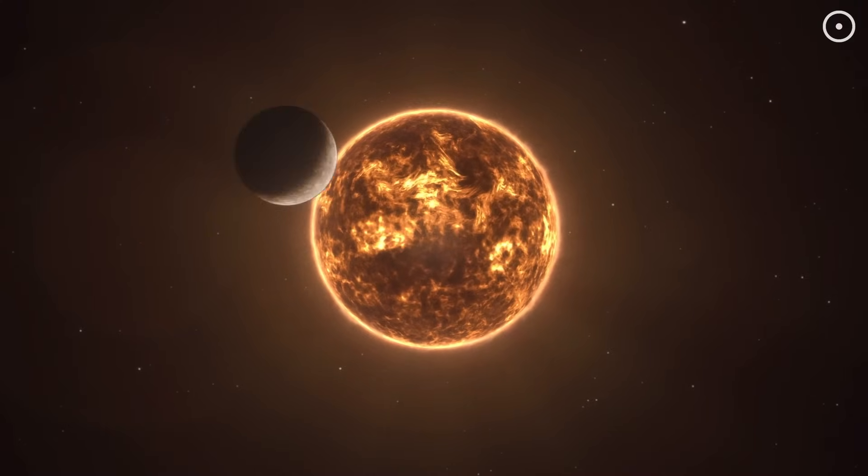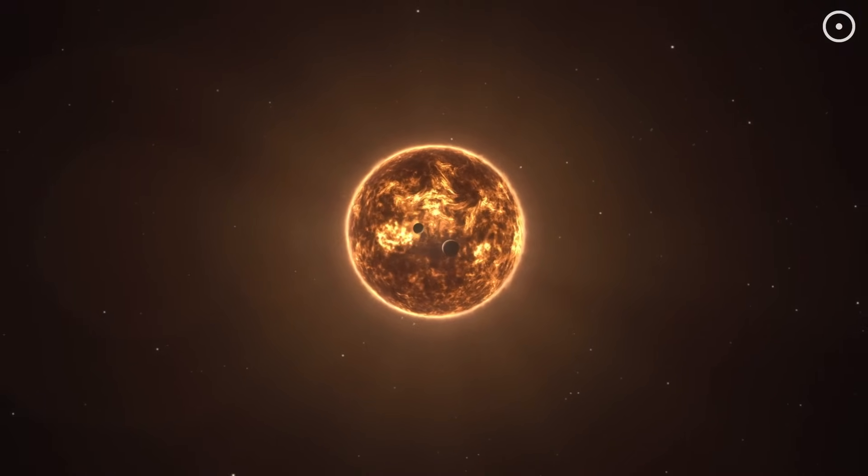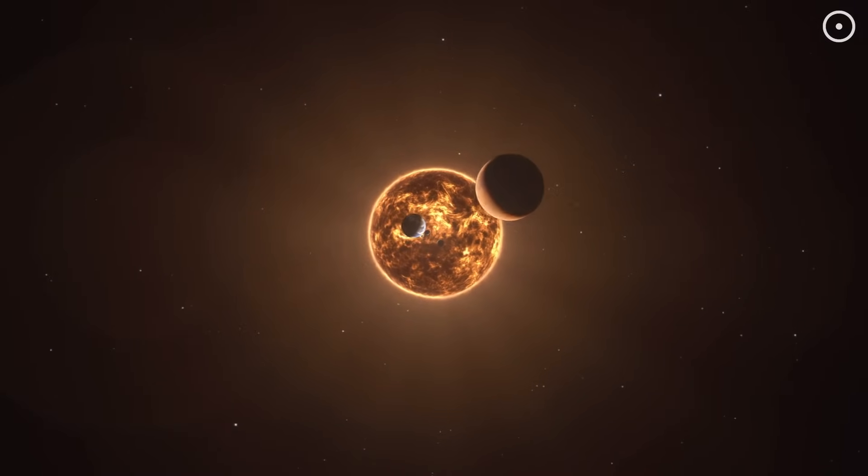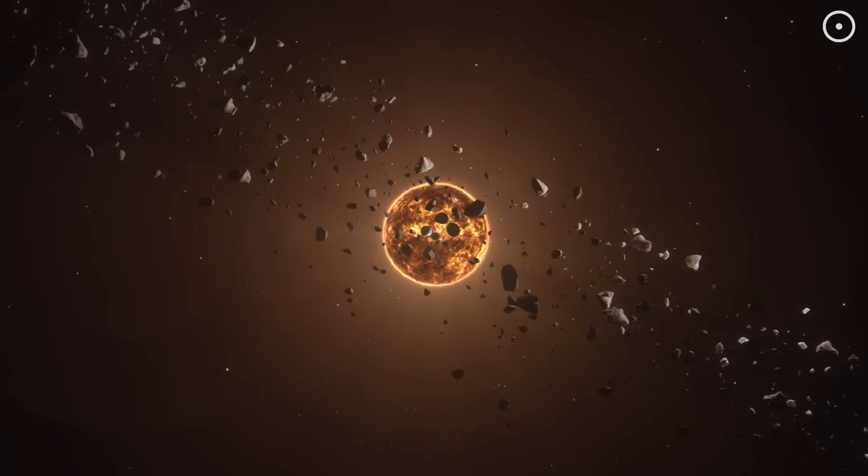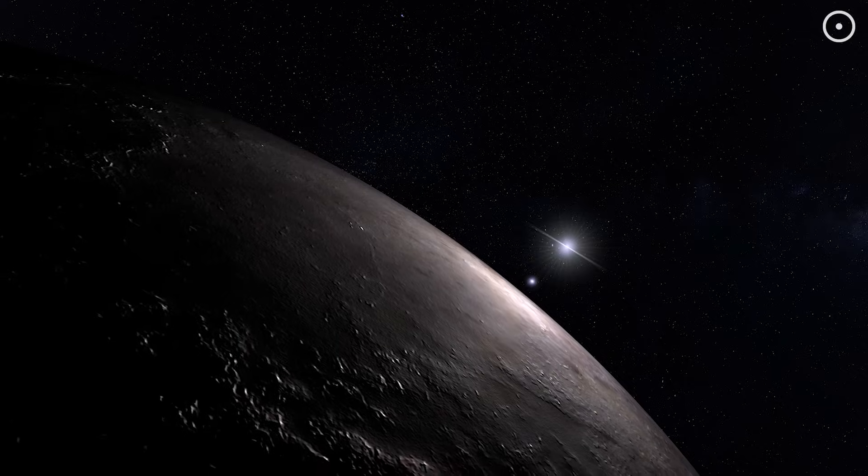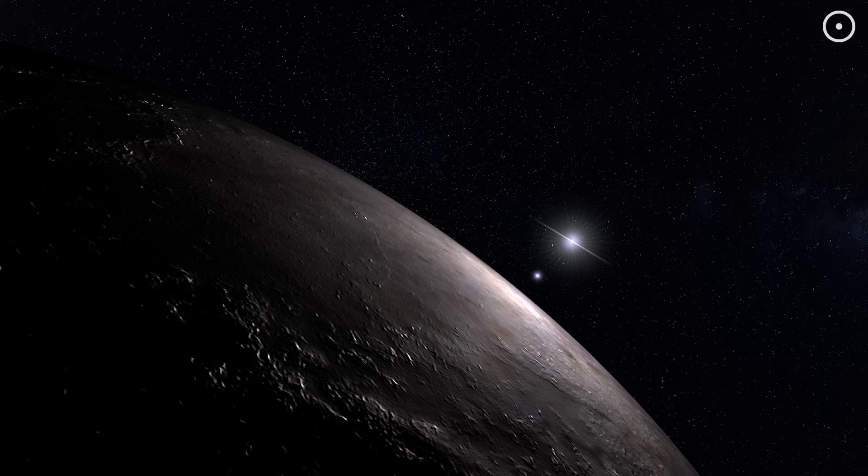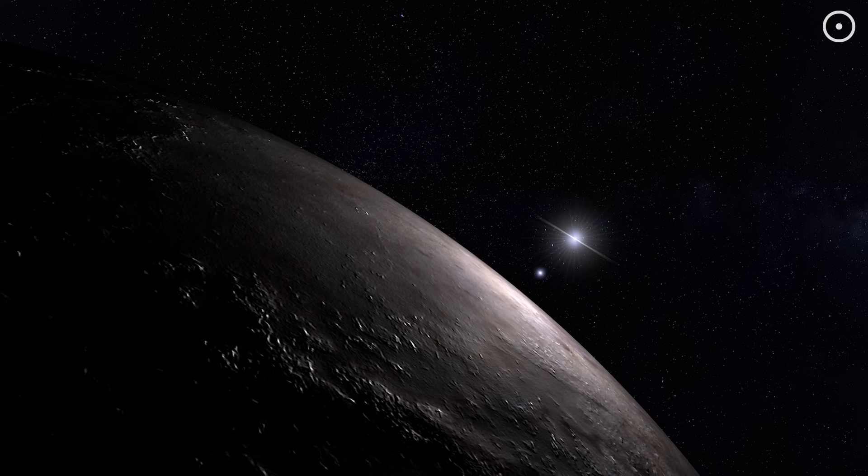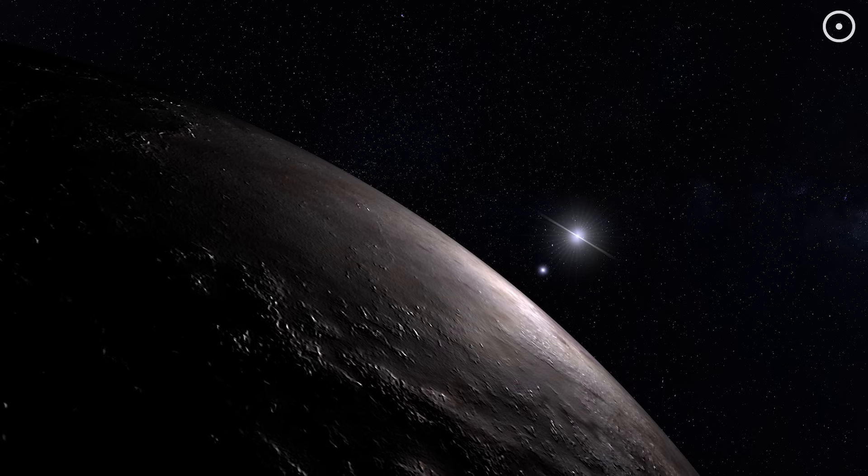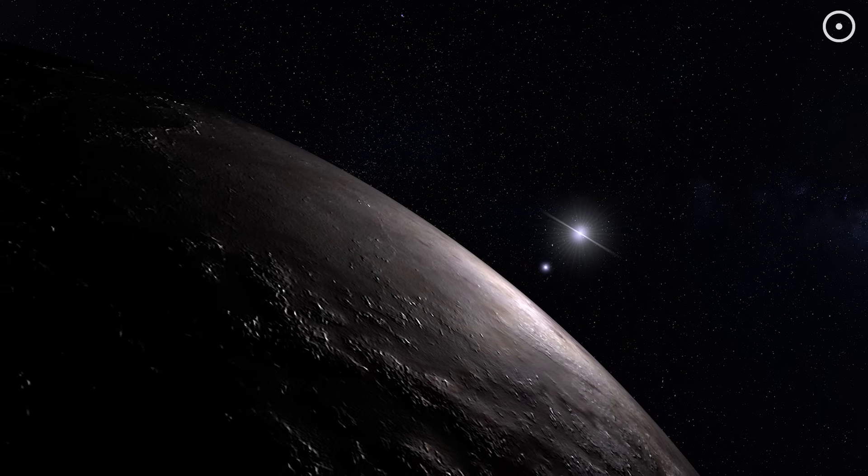So while our single sun solar system might seem simple compared to a binary system, it's fascinating to think about how different our world could have been. Most stars out there dance with a partner, and somewhere in the universe there might be civilizations evolving under the light of two suns, wondering what it would be like to have just one.